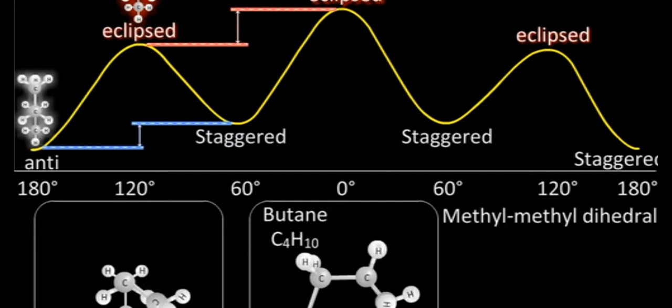On further rotating the conformation by 60 degrees, we obtain the conformation known as staggered conformation. It is more stable than the previous conformation, but it has higher energy than the previous staggered conformation. But still it is more stable than the eclipsed conformation. We call this conformation gauche conformation.